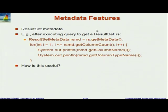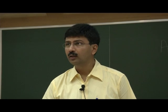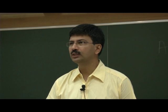You loop over those columns from 1 to the column count, and then print `rsmd.getColumnName(i)` and `rsmd.getColumnTypeName(i)`. That prints the column name and the type of each column.